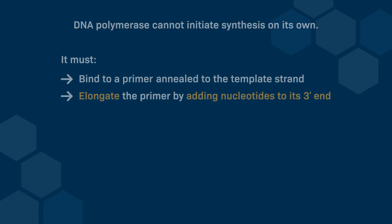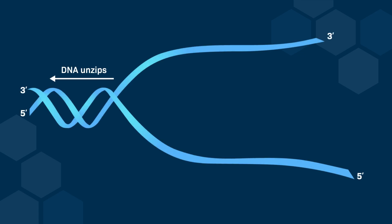Before we discuss the synthesis of the leading and lagging strands, let's define a few key terms. DNA synthesis by DNA polymerase always proceeds in the 5' to 3' direction, adding nucleotides to the 3' end of a growing strand.